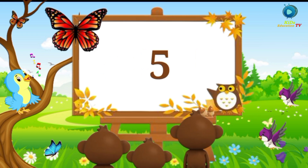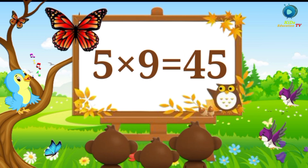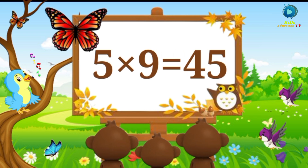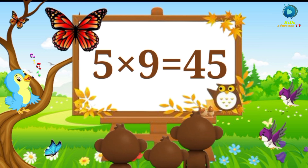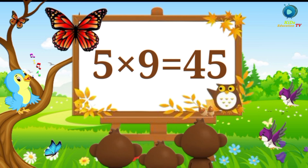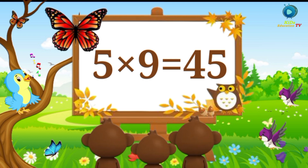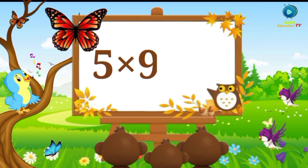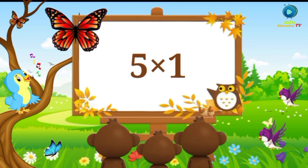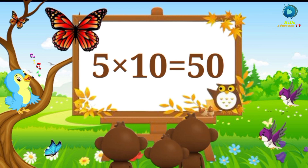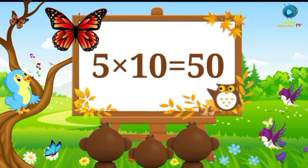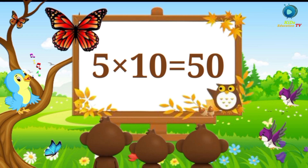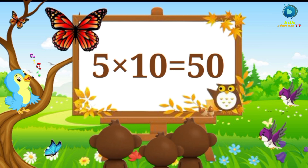5 nines are 45. Say with me: 5 nines are 45. 5 tens are 50. Say with me: 5 tens are 50.